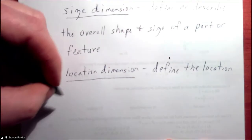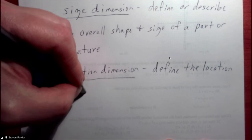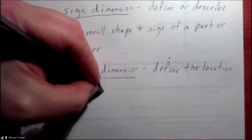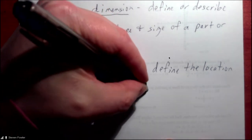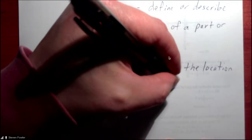It's not real complicated. You can probably guess what a location dimension does. It's going to define the location of a part or a feature within the part.